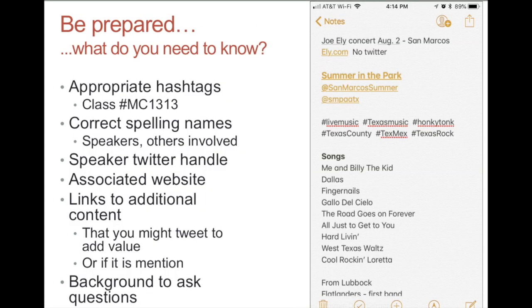So what do you need to do to be prepared? There's a long list and you may come up with many more items. You've got to know the appropriate hashtags for whatever you're doing. In our case, we'll certainly use the class hashtag MC1313, but there will be other ones potentially as well. Correct spelling on names — the whole name — but also the Twitter handle of anybody you might mention. If there are associated websites, it's good to have that information. You may want to put that out as extra content to share with your audience, giving them a little something extra even to people who might be in the room. Background to ask questions — there isn't always an opportunity to ask questions, but having that background can help you understand the context of what's going on.